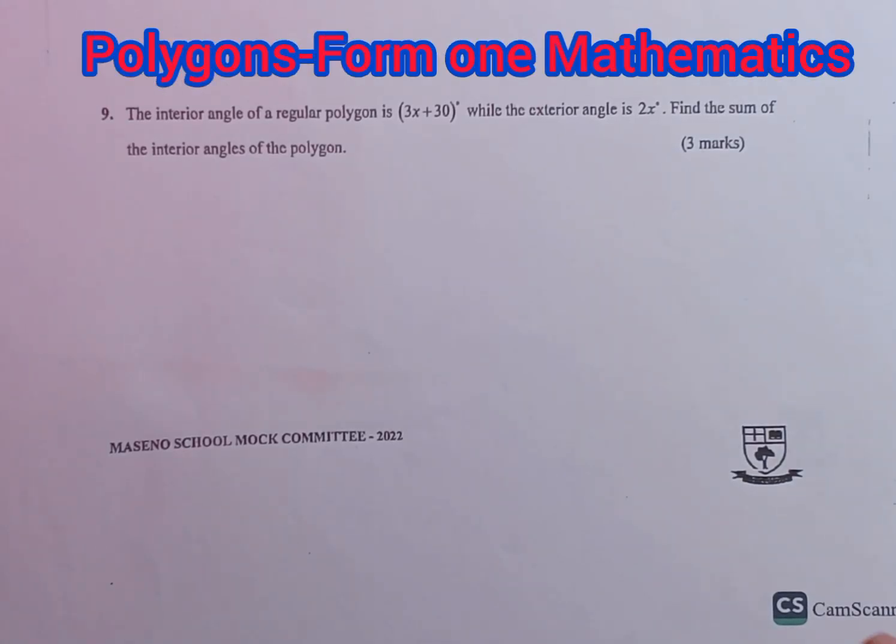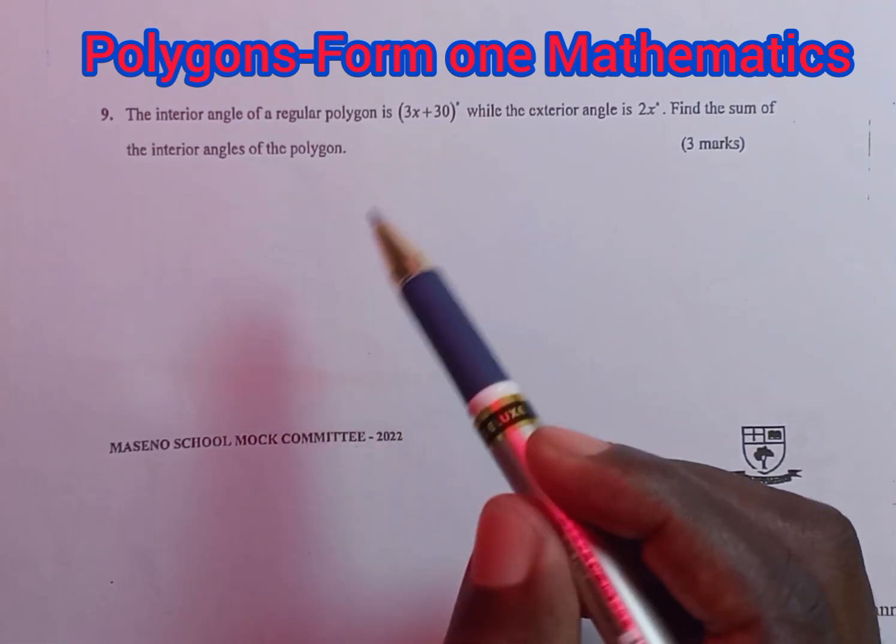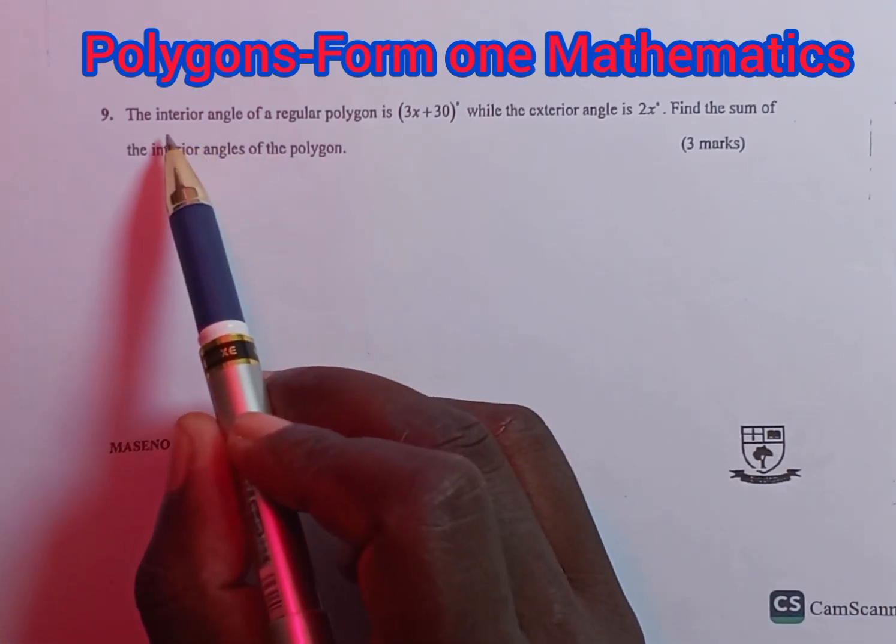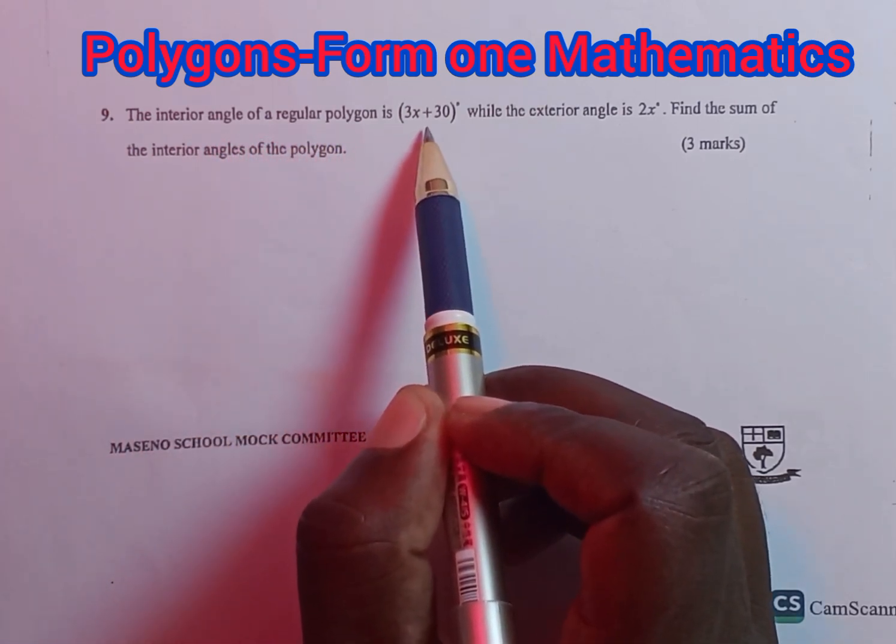Welcome and thank you for always joining us. We are presenting a question on polygons. The question reads: the interior angle of a regular polygon is 3x plus 30